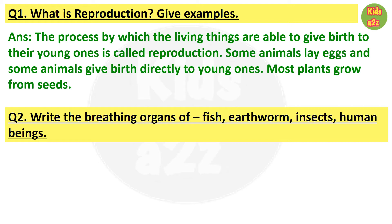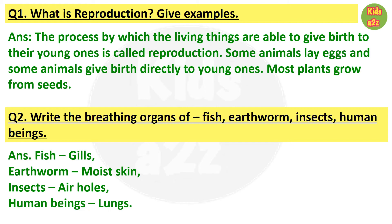Write the breathing organs of fish, earthworm, insects, and human beings. The breathing organs of fish are gills. Earthworms breathe through moist skin. For insects, it is air holes. For human beings, the breathing organs are lungs.